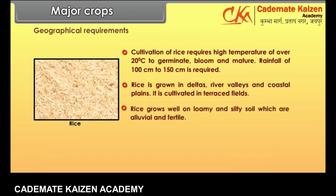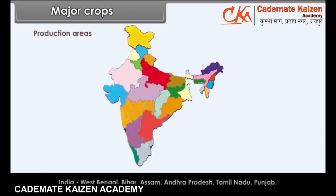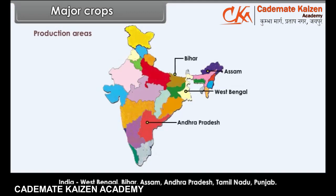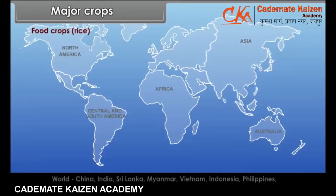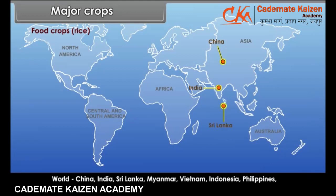Rice grows well on loamy and silty alluvial and fertile soil. Production areas in India include West Bengal, Bihar, Assam, Andhra Pradesh, Tamil Nadu and Punjab. World producers include China, India, Sri Lanka, Myanmar, Vietnam, Indonesia, Philippines and Japan.